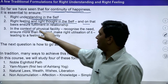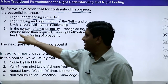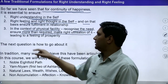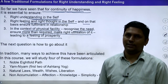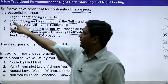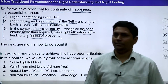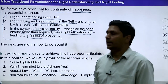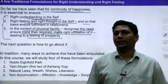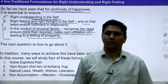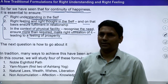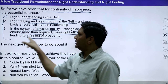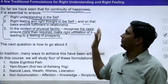Then right feeling and right thought in the self is required. In the context of physical facility, recognition of the need and right utilization of available physical facility with the feeling of prosperity is required. So for continuity of happiness, these three things are required: right understanding, right thoughts and feelings, and a feeling of prosperity so we can assess our real requirement of physical facility. With all three ensured, one can live with continuous happiness.